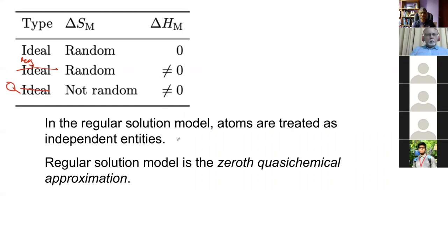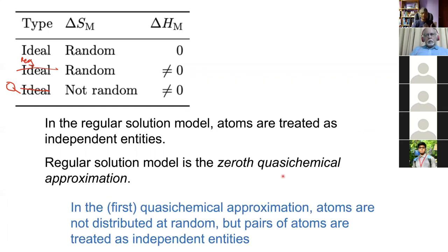In the regular solution model, atoms are treated as independent entities — it's called the zeroth-order quasichemical model. In the first-order quasichemical approximation, we say atoms are not distributed at random, but pairs of atoms are treated as independent quantities.